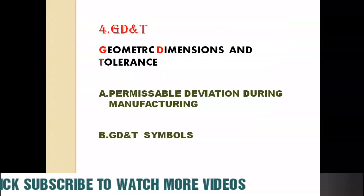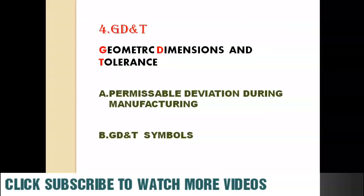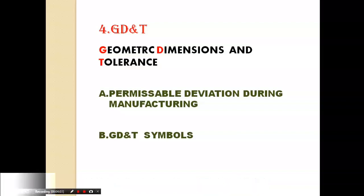The last factor is GD&T — geometrical dimensions and tolerance. During the machining process we cannot achieve 100% accuracy, so we have to provide a permissible deviation during the manufacturing process. A design engineer must have knowledge of GD&T symbols, which are created in a drafting sheet.